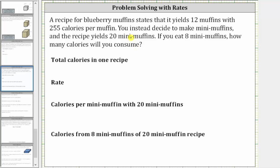Let's break this into parts. Let's first determine the total calories in one recipe. From the first sentence, when the recipe yields 12 muffins, there are 255 calories per muffin, which means to find the total calories in one recipe, we take 12 muffins and multiply by the rate of 255 calories per muffin. Let's write 12 muffins as a fraction with a denominator of one, and then multiply by the rate of 255 calories per one muffin.